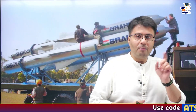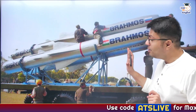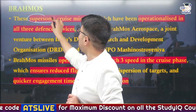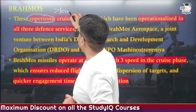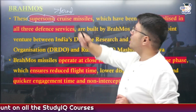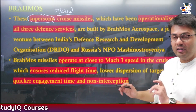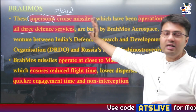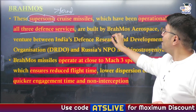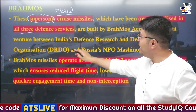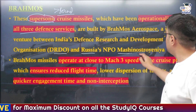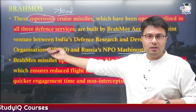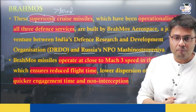Let us move to another important missile in India's armory — the BrahMos Missile. This is a supersonic cruise missile, meaning it travels faster than the speed of sound. All three services of India — the Air Force, Navy, and Indian Army — have these missiles. They were developed by BrahMos Aerospace, which is a joint venture between India's DRDO and Russia's NPO Mashinostroyeniya. The BrahMos Missile operates very close to Mach 3, meaning it travels three times the speed of sound.